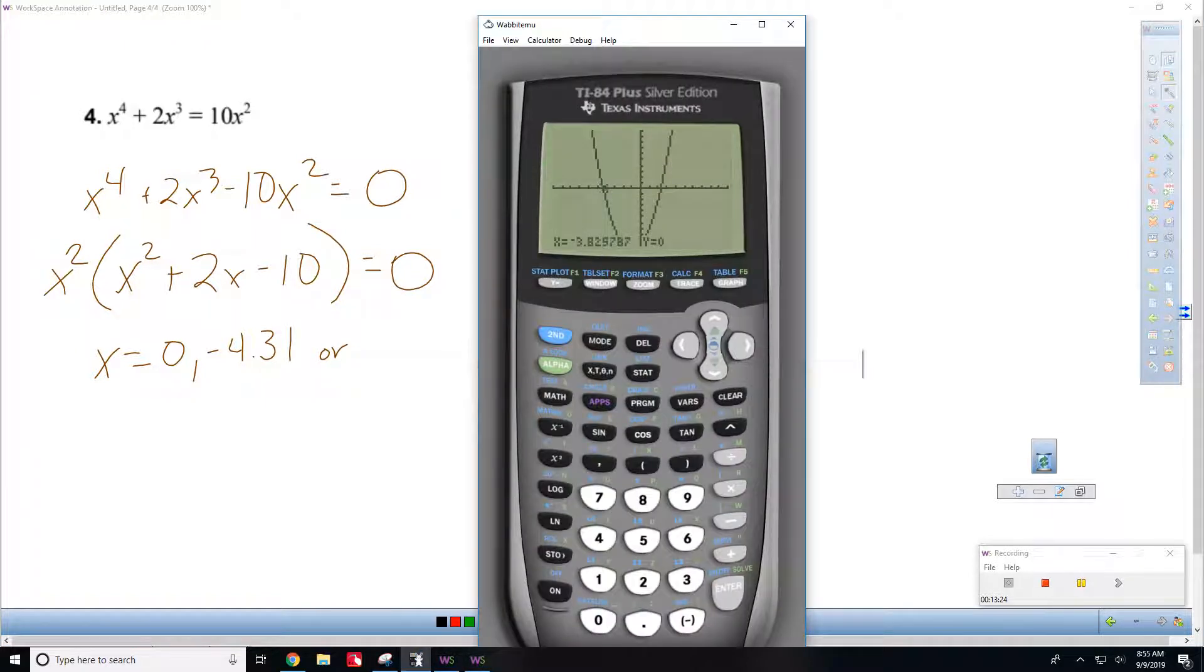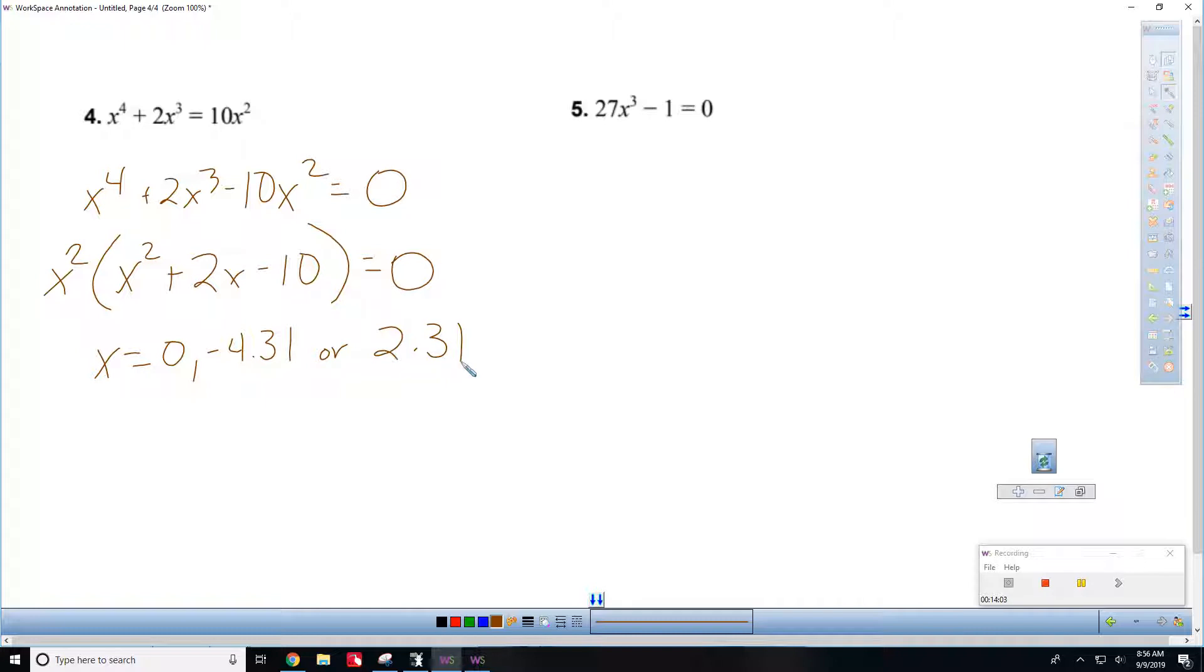Now, we want to do that again for the other one. So, second. Calculate. Zeroes. All right. Here we go. Get to the left of the answer. Hit enter. Get to the right of the answer. Hit enter. Take a guess. 2.3166. Okay. And there's your answers.